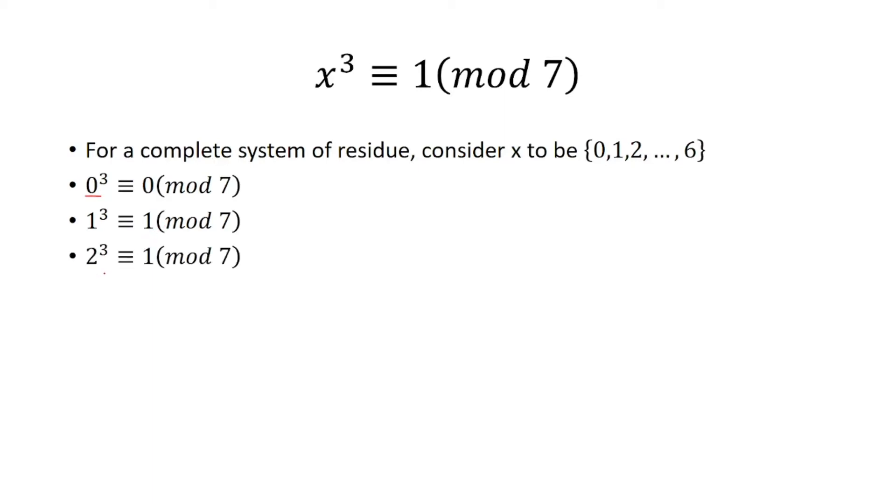Now, 2 cubed is greater than 7. 2 cubed is 8. 8 mod 7 is 1, since when I divide 8 by 7, I have a remainder of 1.